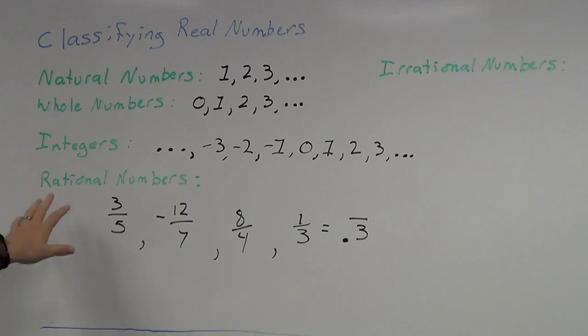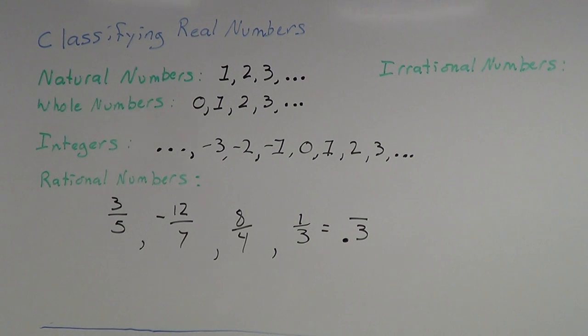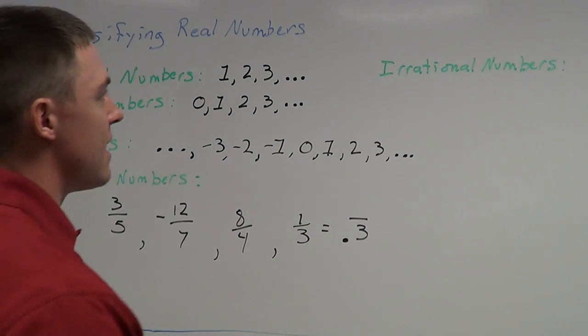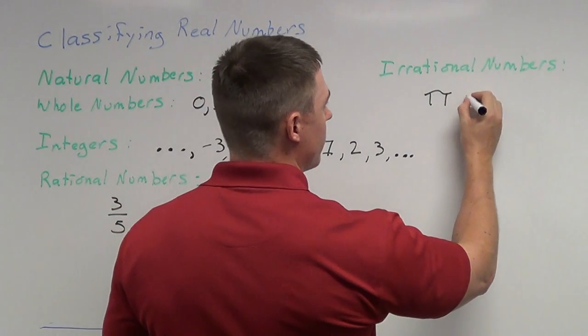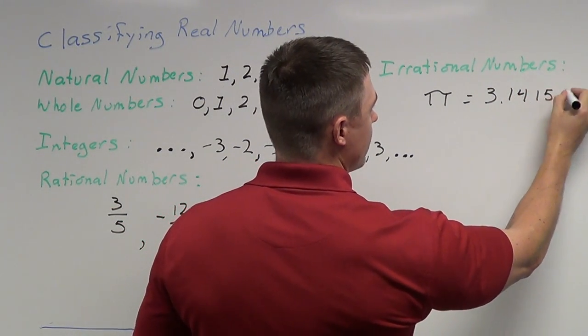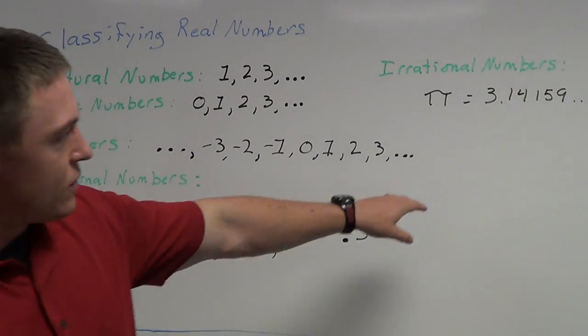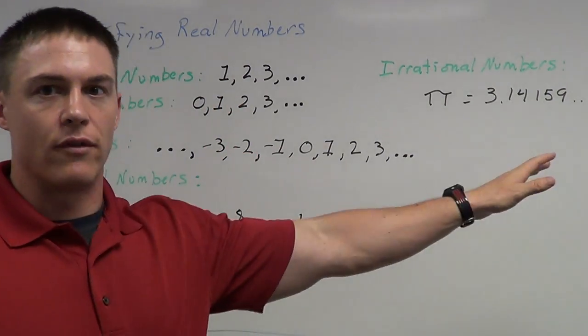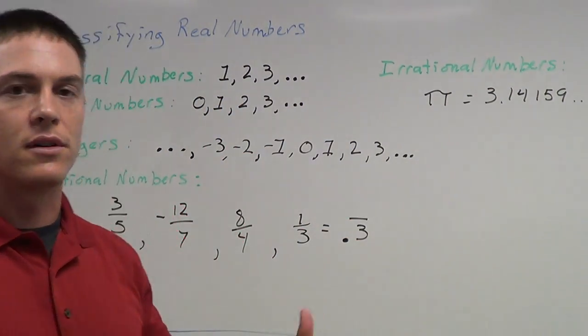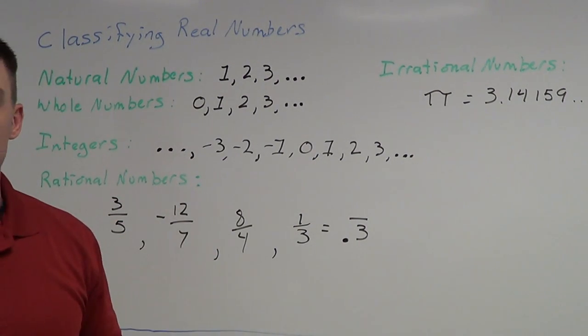Now, over to this other side, the irrational numbers. These ones are a little bit different. The most popular irrational number that you'll see is pi. Everybody knows what pi is, 3.1415159, so on and so forth. Now, the difference between pi and something like point three repeating, we all know pi goes on forever. It just keeps going on forever and ever and ever. Just random numbers, they just keep going, they keep accumulating.